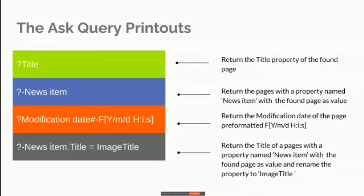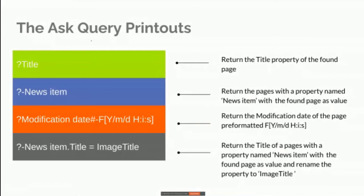You can also pre-format some of the results — for example, dates can show up formatted for your local region. Another example is a backward search where an image item has a property value pointing to the found page, and that image page also has a title property. Since we already have something called 'title', we give it a unique name to use in our template.